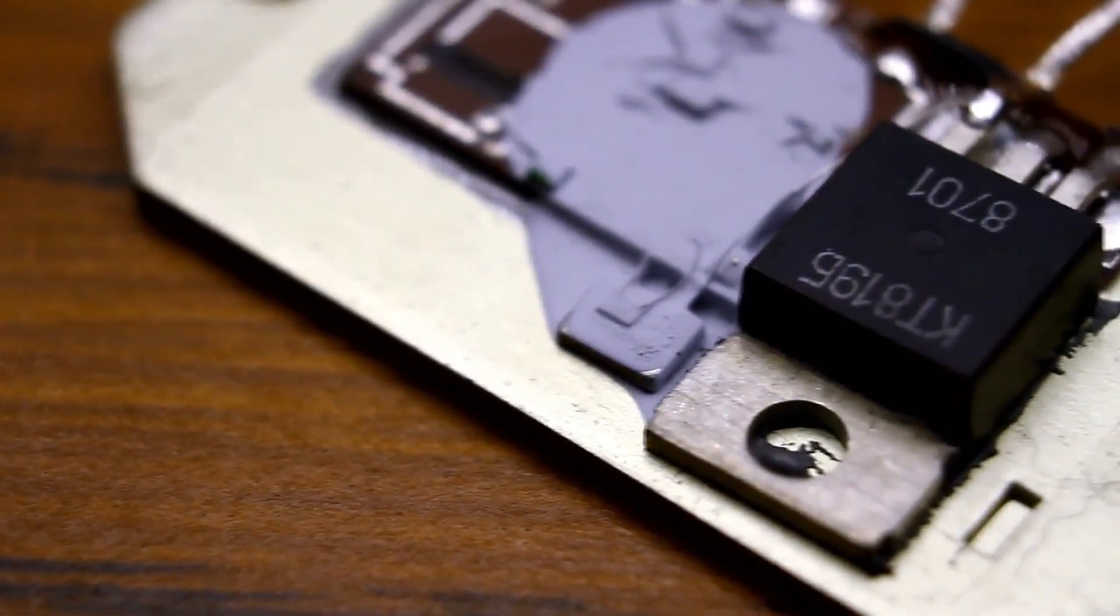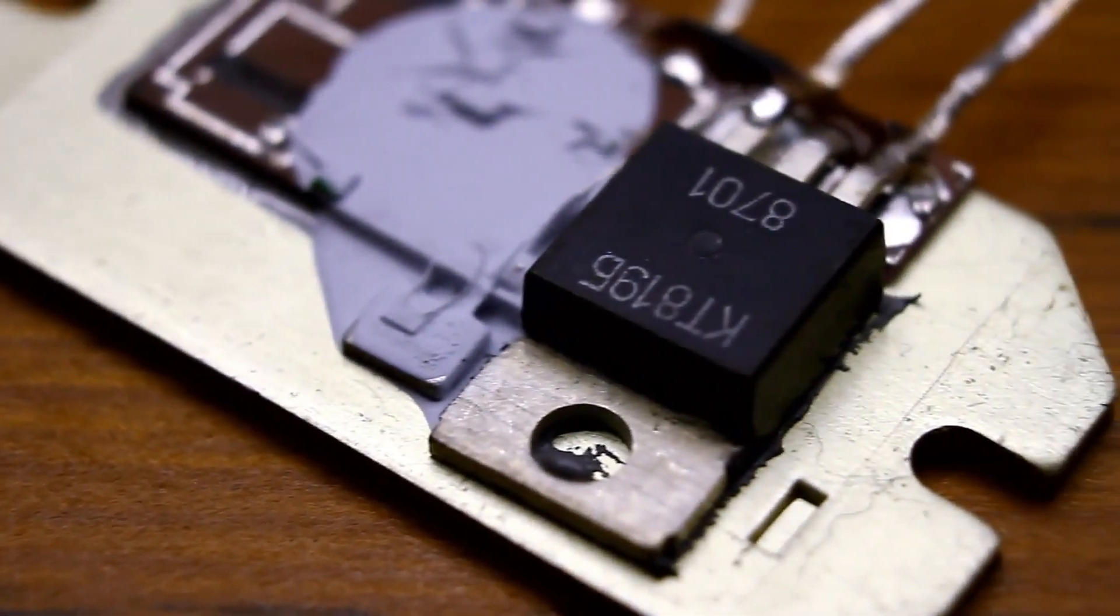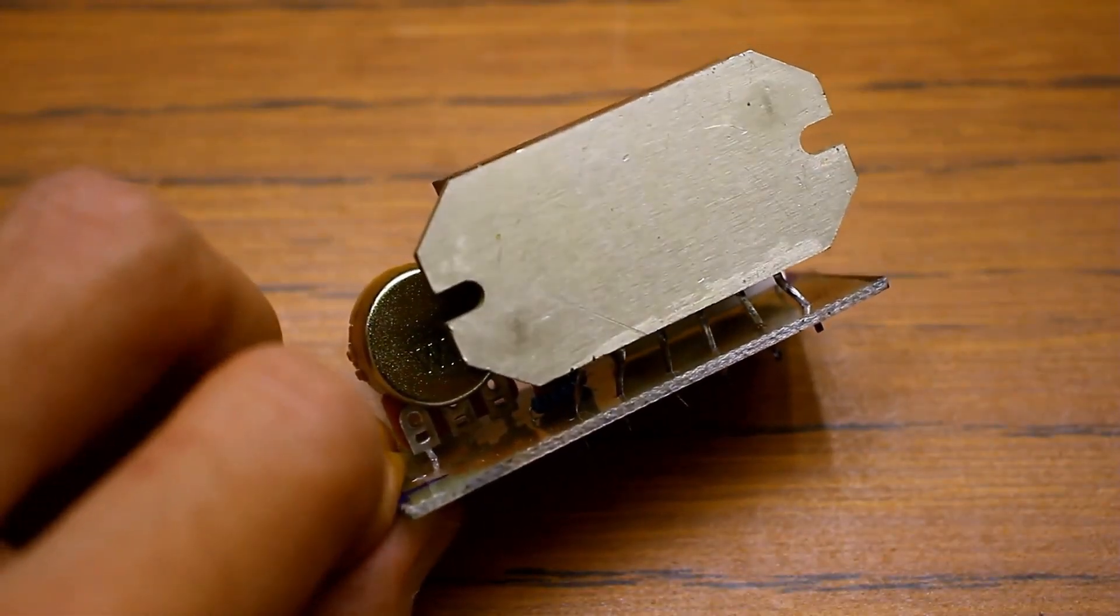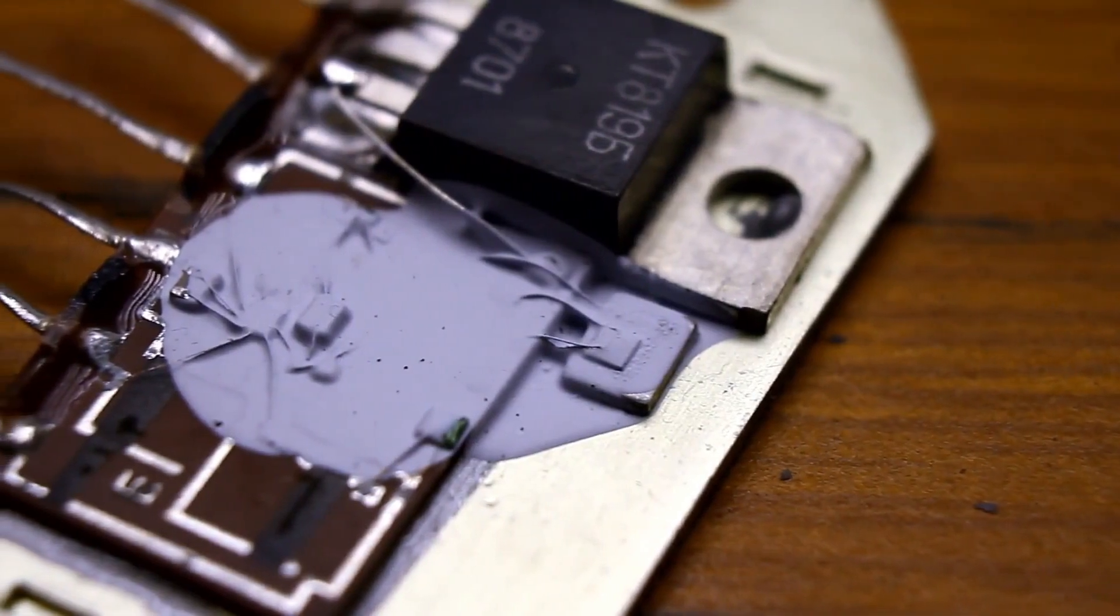There shouldn't be any cooling issues, the transistor is through thermal paste. By the way, the substrate of the microassembly is aluminum with a fairly large area. We put everything back together and solder it onto the board.